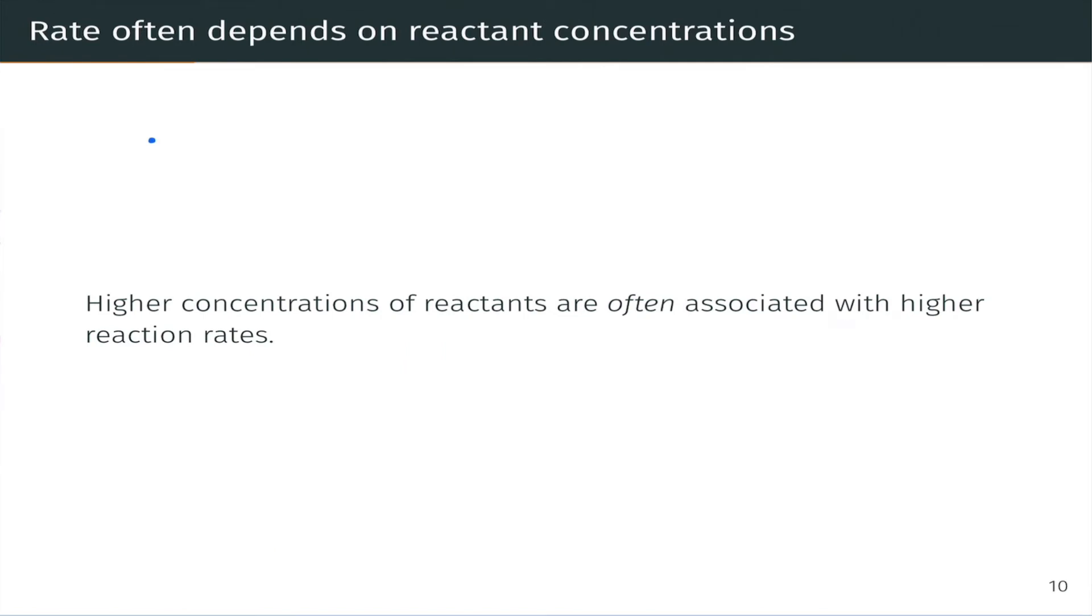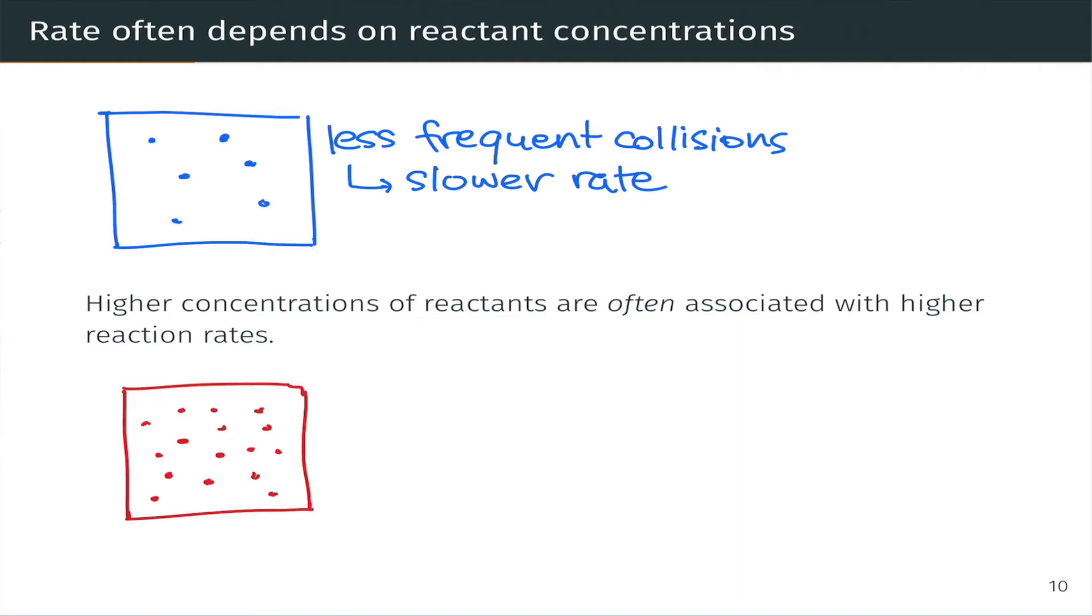Reaction rate also depends on the concentrations of reactants, and this is especially important in homogeneous reactions happening in solutions. So for example, at a relatively low concentration of the reactants, collisions are less frequent. The molecules just bump into each other less often, and this generally leads to a slower reaction rate. At higher concentrations of the reactants, collisions become more frequent, and the rate of the reaction increases as a result.